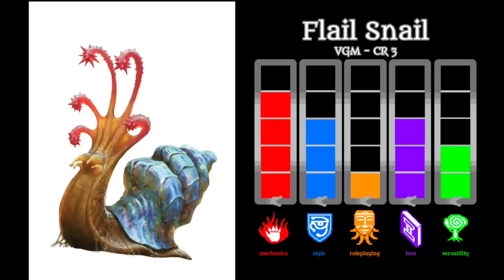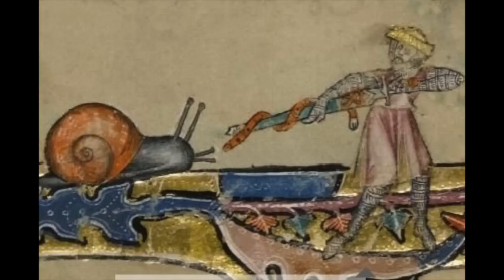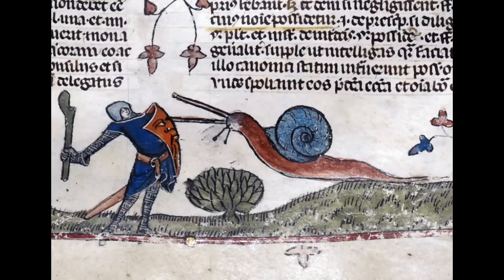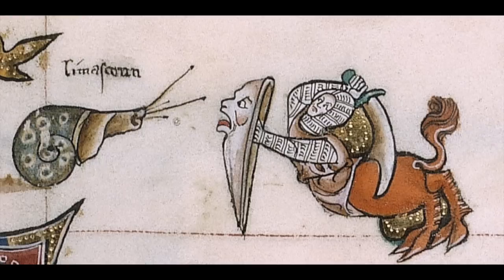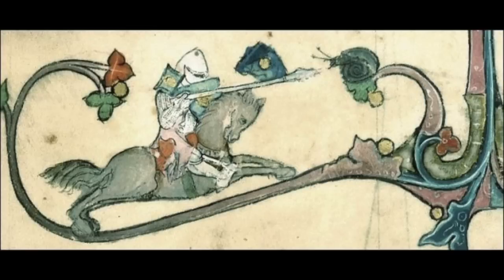Another monster I've overlooked for years is the flail snail. I always thought it looked too cheesy, but after giving it an honest chance I really warmed up to it. There does appear to be some historical roots for this monster — lots of late medieval manuscripts feature knights fighting snails in the margin images, sometimes of giant proportions. There are a number of theories about what these drawings represent, which is actually beyond the scope of this video, but it's a curious topic to read about.